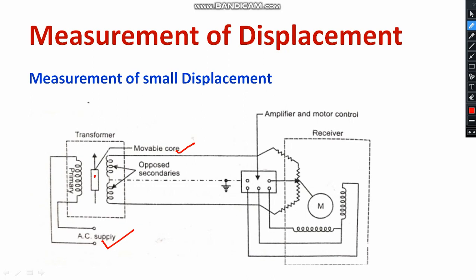I wanted to measure the displacement of a mechanical object, which is directly connected to the movable core. Looking at the receiver part, there is a suitable motor with a suitable winding, and a control unit. There is also an amplifier to amplify the signal, and the system is connected with proper grounding. These are the entire setup for measurement of very minute displacement.